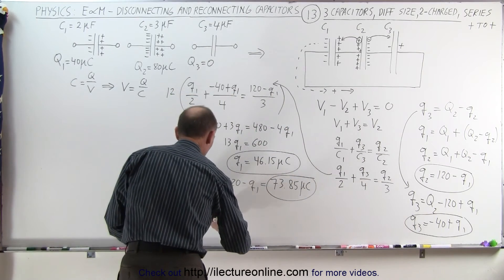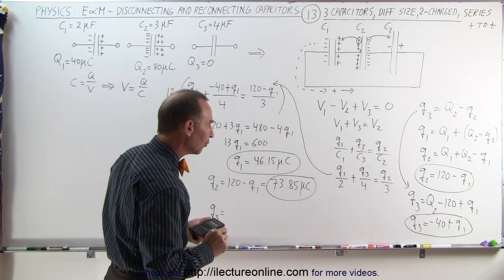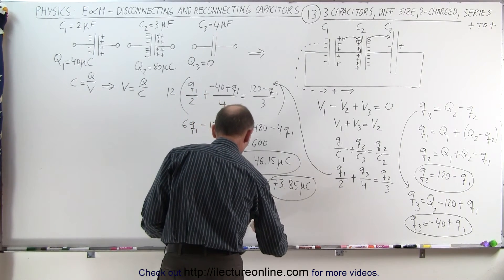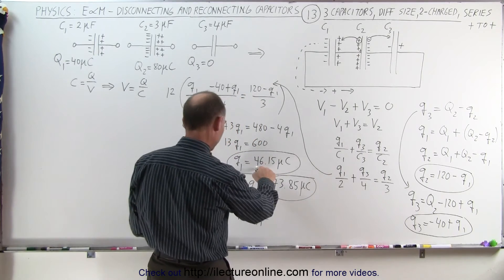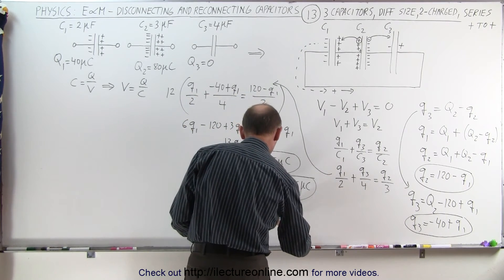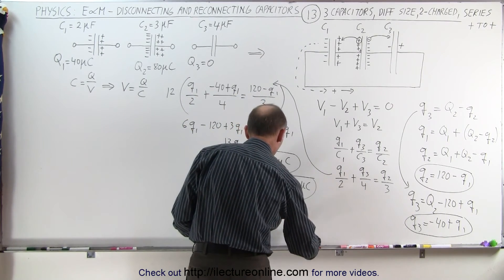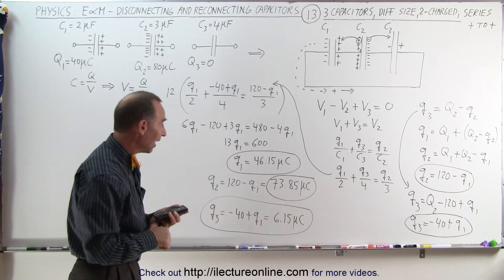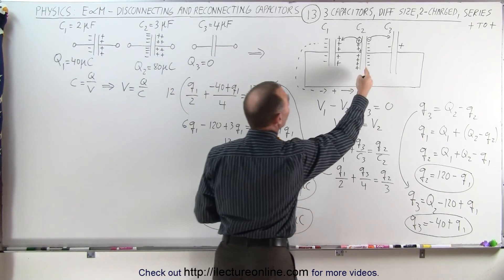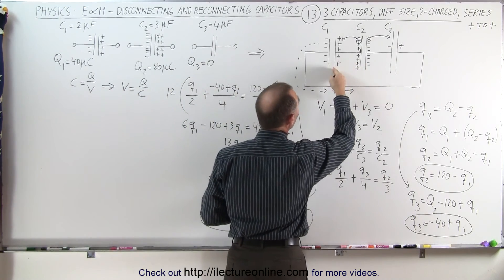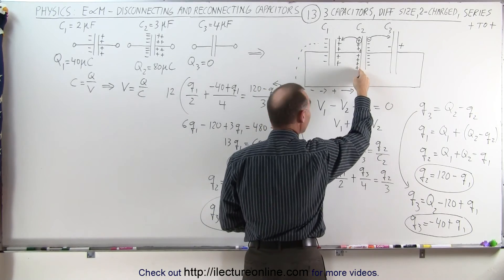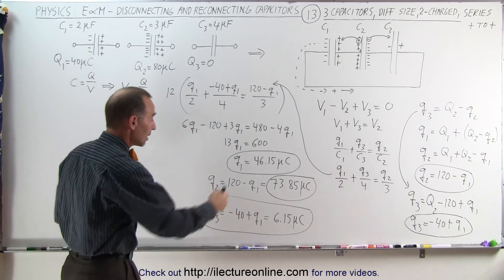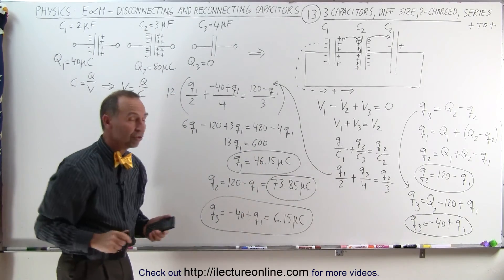And Q3 is equal to minus 40 plus Q1. Minus 40 plus Q1. And so that would be minus 40 plus this, that gives us a positive 6.15 microcoulombs. What it looks like happened is that 6.15 microcoulombs went from this capacitor to this capacitor, and 6.15 microcoulombs went from this capacitor to this capacitor, and then it stopped. And so here we have the final charge on each of the three capacitors.